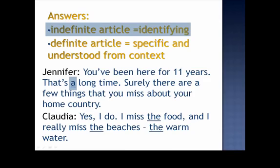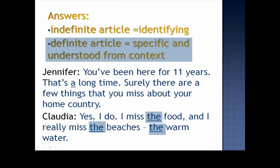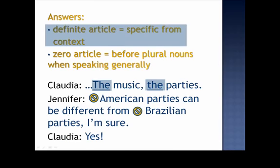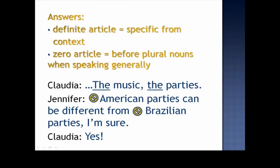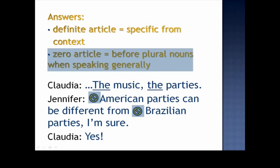Claudia, I know you've been here for 11 years — that's a long time. Surely there are a few things that you miss about your home country. — Yes, I do. I miss the food, and I really miss the beaches, the warm water, the music, the parties. — Yeah, American parties can be different from Brazilian parties, I'm sure. You were correct if you predicted an indefinite article in the phrase 'a long time,' because it was identifying something. You were also correct if you predicted 'the food,' 'the beaches,' 'the warm water' — Claudia was talking about specific things she missed from Brazil. For the same reason, Claudia said 'the music,' 'the parties' — they were specific from context. You were correct if you predicted the zero article before 'American parties' and 'Brazilian parties,' because they were talking about these parties in general — no parties in particular.